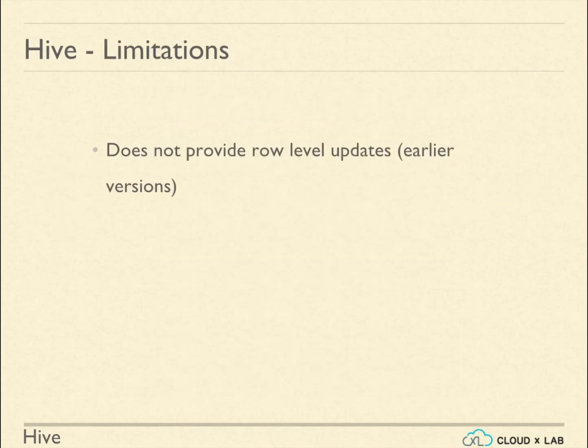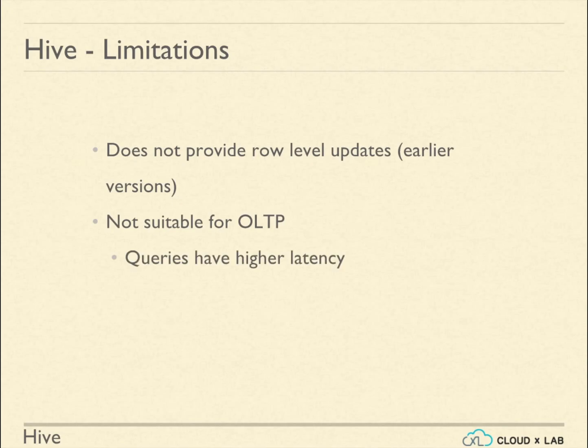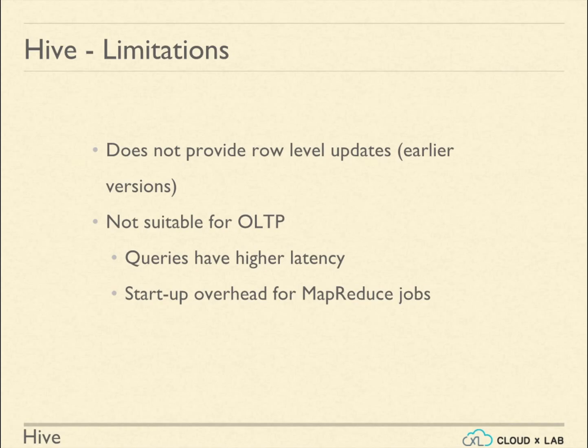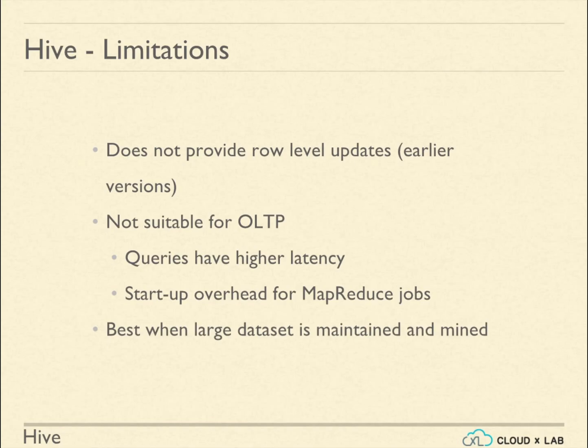Though earlier versions of Hive did not have row-level updates, the recent versions provide row-level updates. It is not suited for OLTP — online transaction processing — as Hive queries have higher latencies than queries in relational databases. This is because Hive queries get converted into MapReduce, and MapReduce jobs have startup overhead due to resource allocations via YARN and other factors.